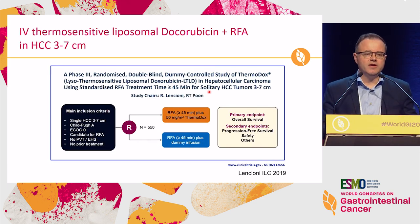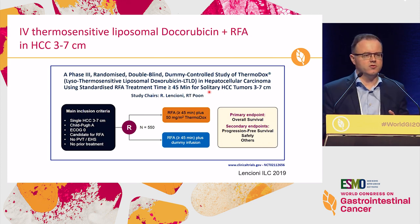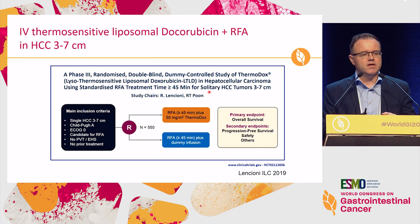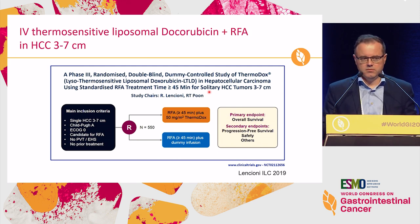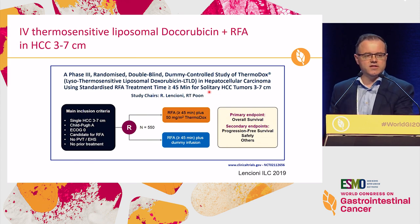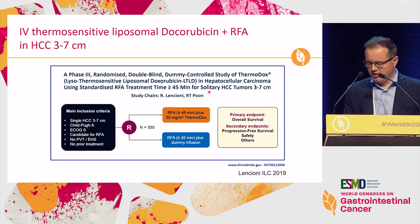An interesting approach to improving ablation is giving an IV injection of liposomal doxorubicin, which is thermosensitive. The hypothesis is that the tumor captures this liposomal doxorubicin, you apply the heat, and then the doxorubicin is expanded into the tumor. A previous phase 3 study was completely negative, but a subgroup clearly showed that you have to apply the heat for more than 45 minutes, otherwise there is no effect. This is now being tested in a new trial, and Ricardo Lencioni announced at the EASL meeting earlier this year that results would be available very soon.